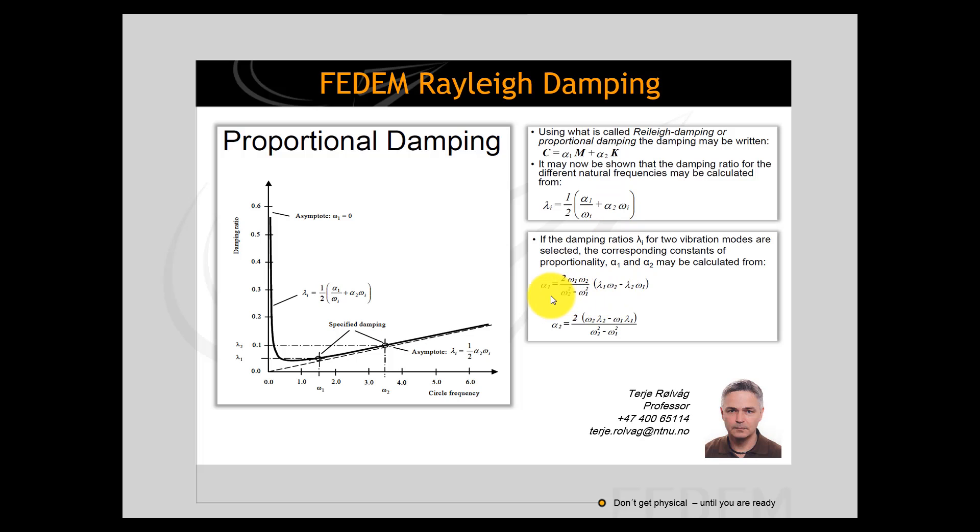If you tweak that equation you can actually calculate alpha 1 and alpha 2 based on two known damping ratios which are based on measurements. And I will also show you how you can estimate the damping ratios.